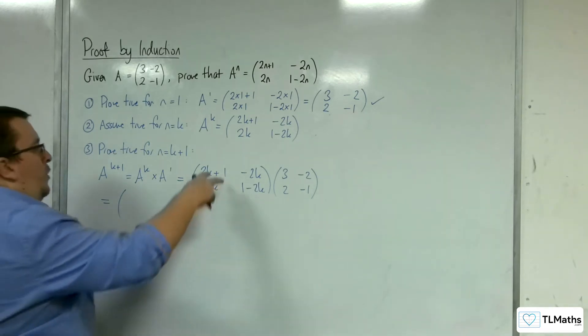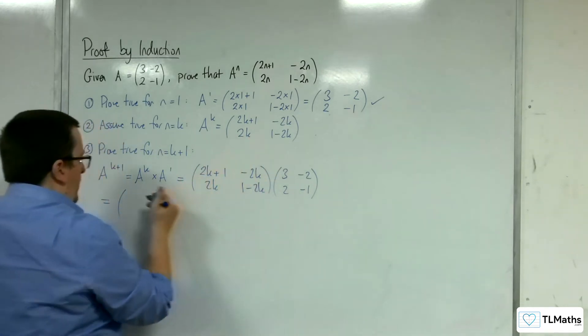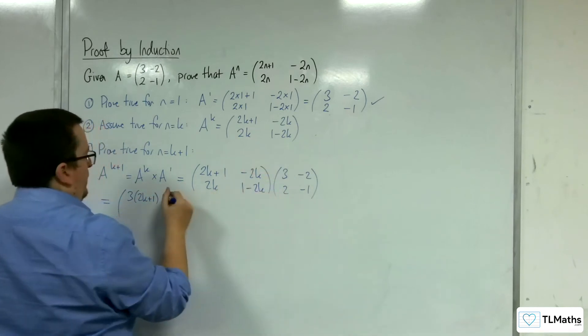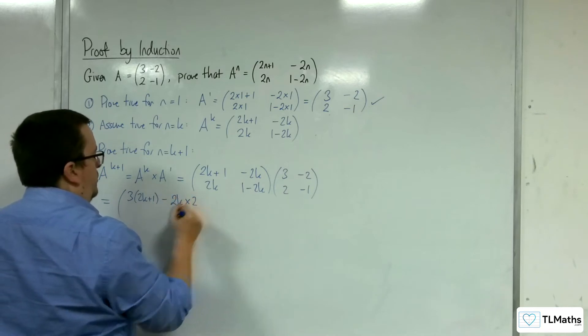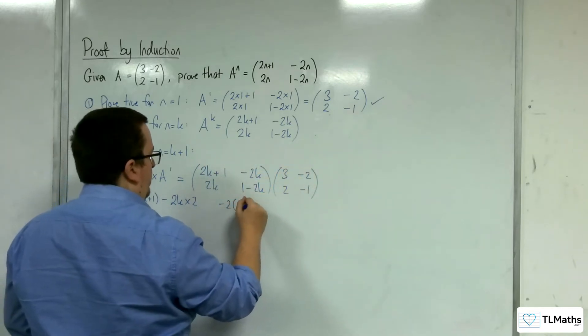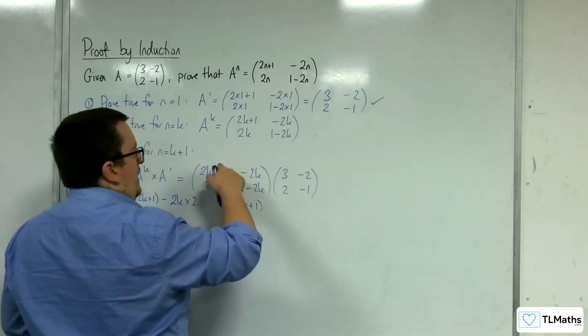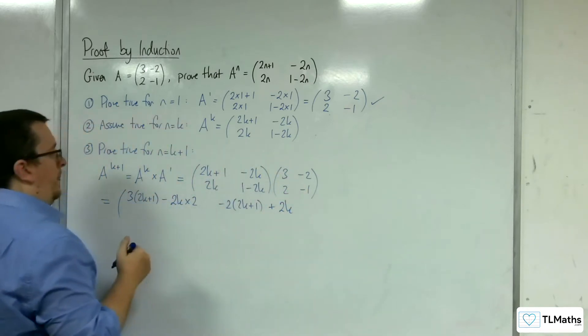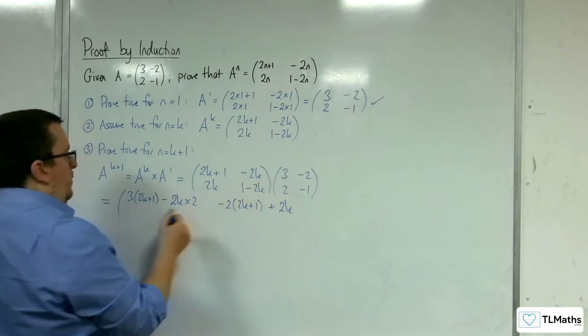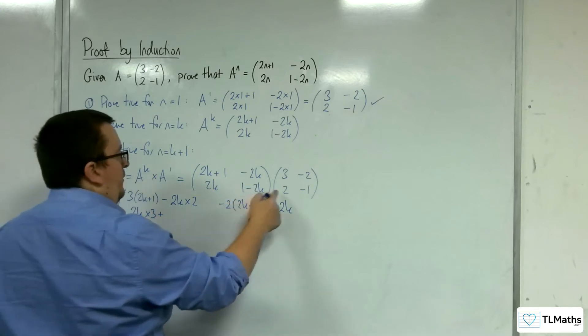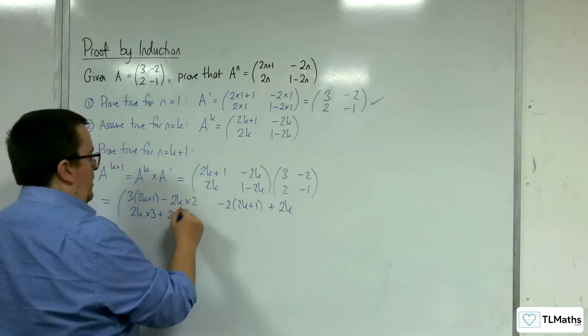So we've got 2k+1 multiplied by 3, take away 2k times 2. Then we've got 2k+1 times -2, so -2 lots of 2k+1, and then -2k times -1, so +2k. We've got 2k times 3, plus 1-2k times 2, so 2 lots of 1-2k.